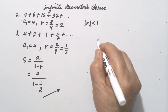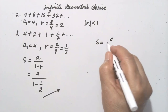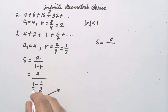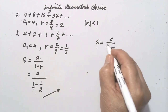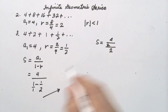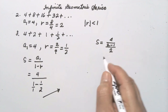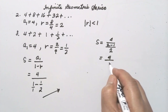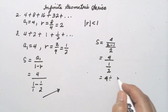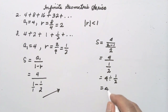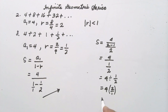Let's continue. S is equal to 4 over — it is understood this is over 1. So: 2 divided by 1 is 2 times 1 equals 2, and 2 divided by 2 equals 1 times 1, which is 1. So this is equal to 4 over 1/2. This can be written as 4 divided by 1/2. Change division to multiplication and invert the divisor — this is 2 over 1 — so this equals 4 times 2, which is 8 divided by 1, equals 8. So the sum is 8.